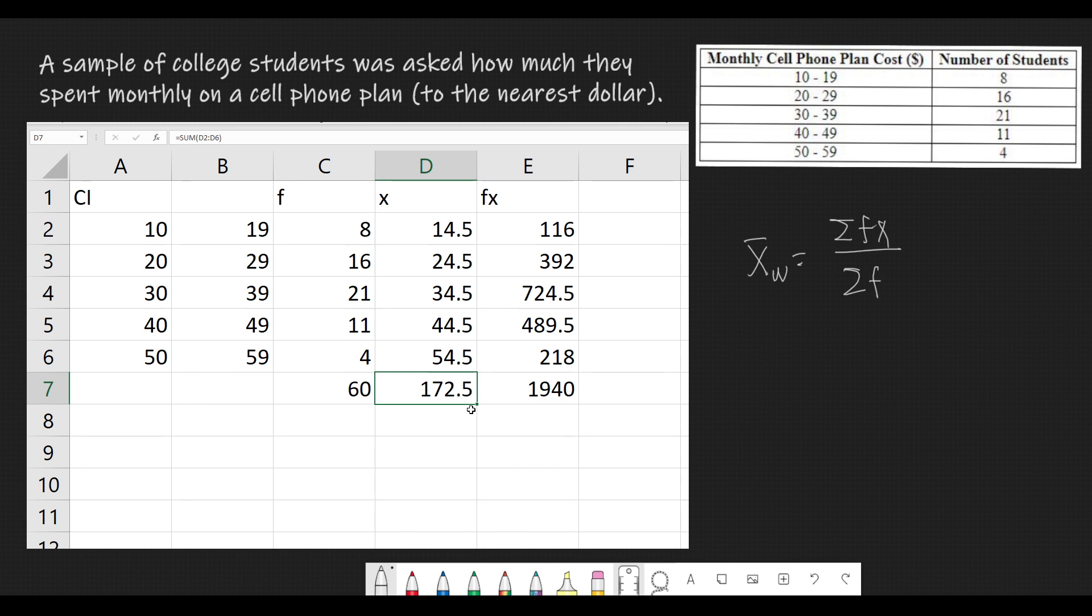So, the mean score or the mean cost for this cell phone plan is equal to 1,940, or that is the summation of f times x divided by 60. We get 32.3333.